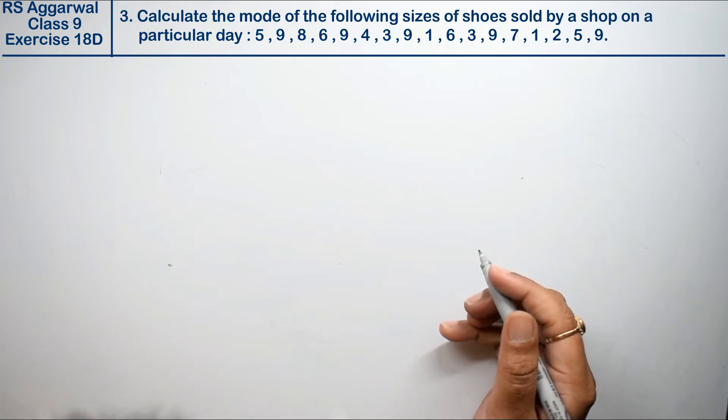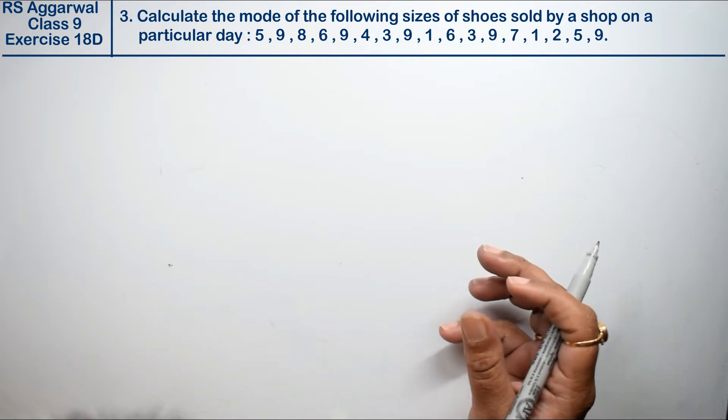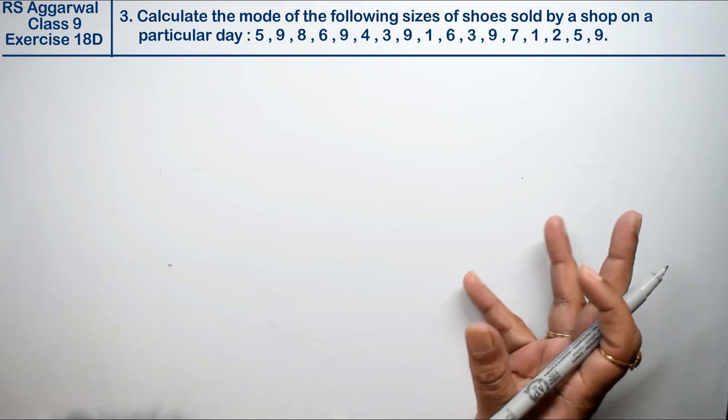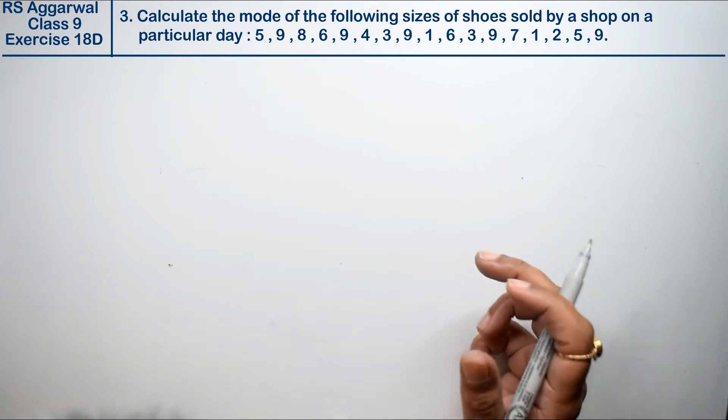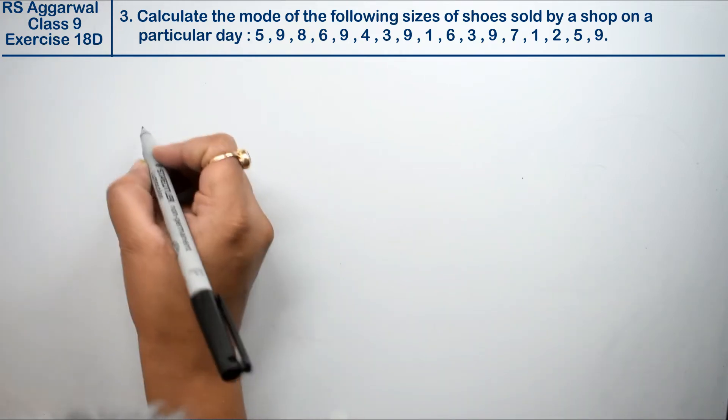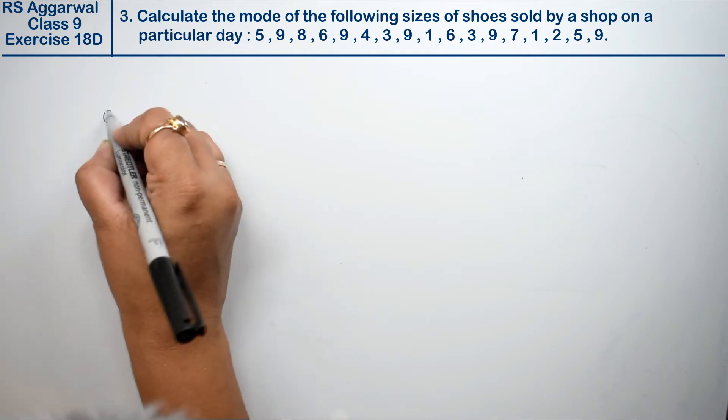Let's do question number 3 of exercise 18D - mean, median, and mode of ungrouped data. Question 3 is: calculate the mode of the following sizes of shoes sold by a shop on a particular day. We need to find the mode of the shoes sold on a particular day. We have different sizes.